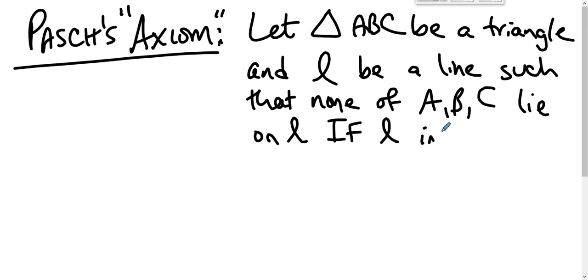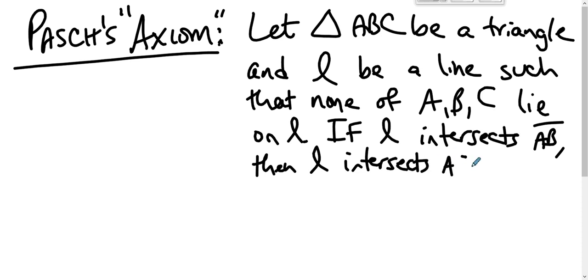If L intersects segment AB, then L intersects segment AC or segment BC. It must intersect one of the other two sides of the triangle.